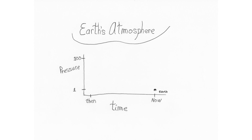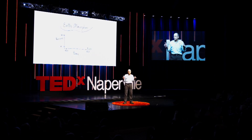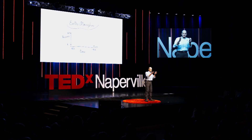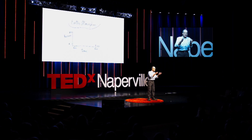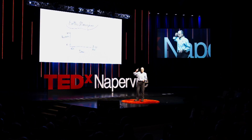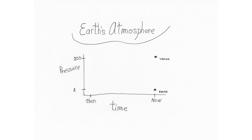Here's Earth. This is atmospheric pressure. Earth has one atmosphere — by definition, it's kind of like measuring the length of a foot based on whoever happens to be king at that moment. So Earth, by definition, has one atmosphere. But Venus, our nearest neighbor, has one hundred atmospheres pressure. And Mars, one one-hundredth of an atmosphere pressure.